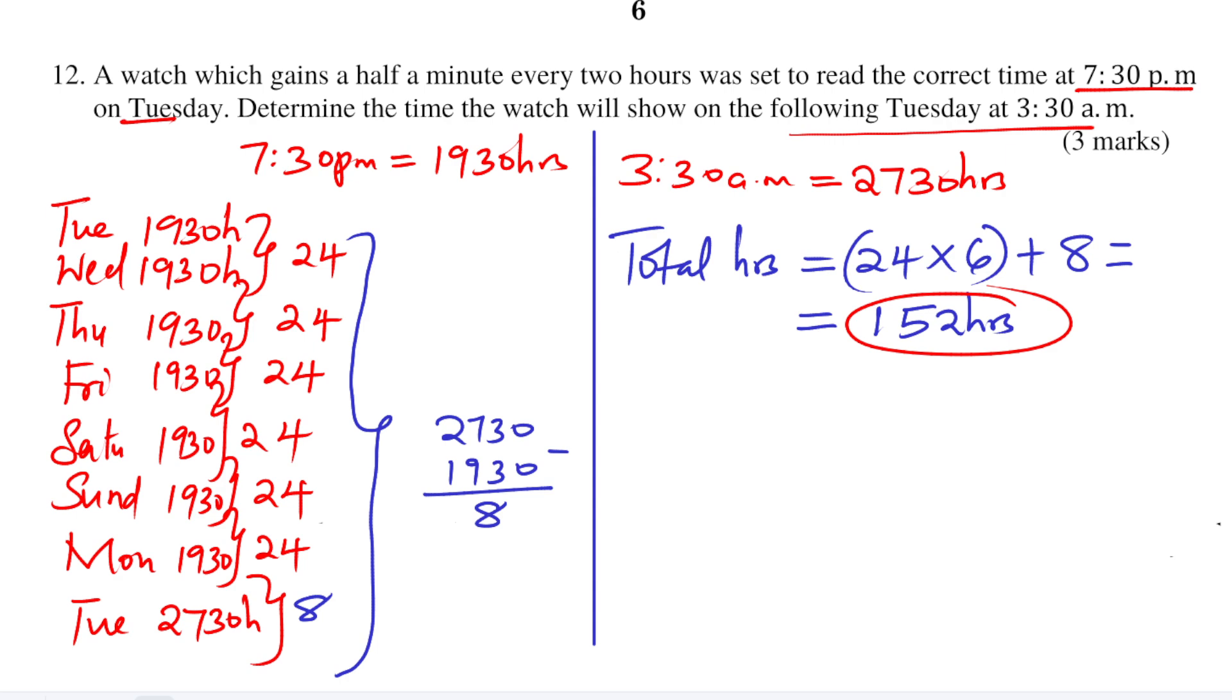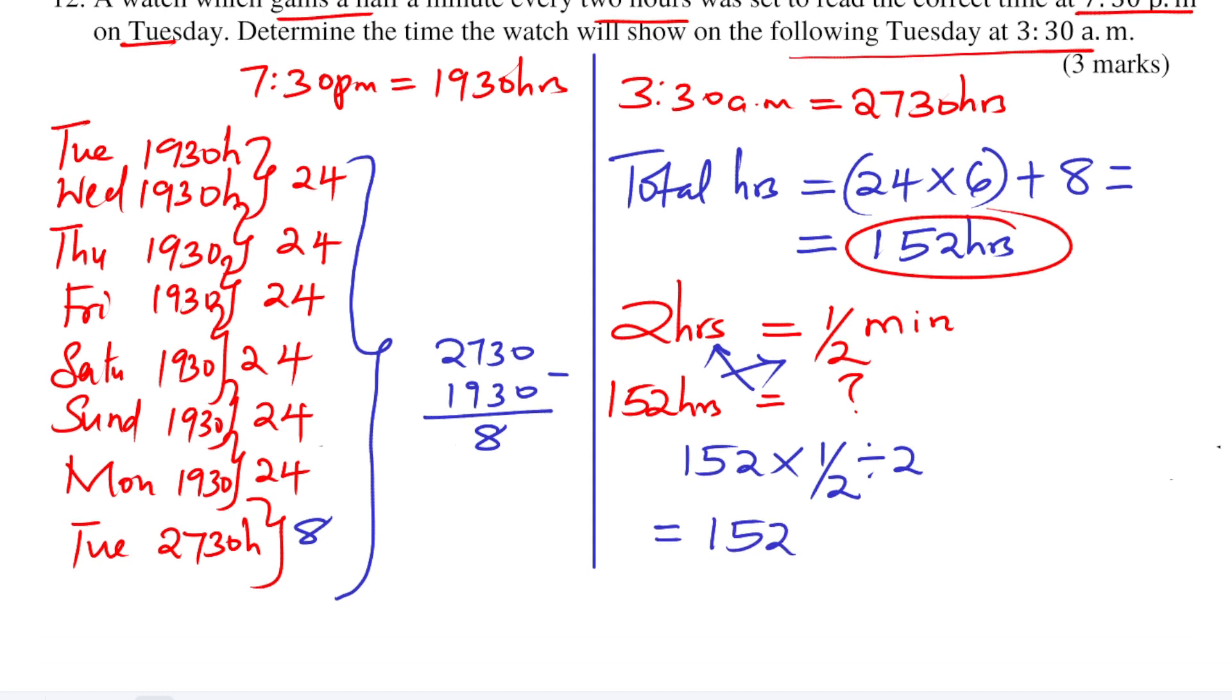Now we go to the first statement. The watch gains half a minute for every 2 hours. So what about for this total time, which is 152 hours? So we cross multiply. We get it by 152 multiply by half, then divided by 2. And this will be 152 times half times half, which gives 152 divided by 4. You get 38 minutes.